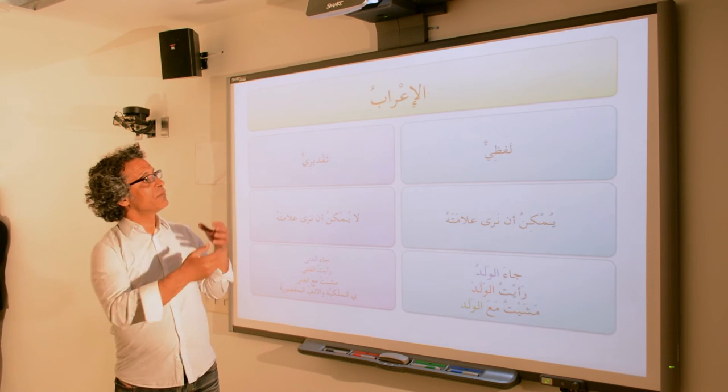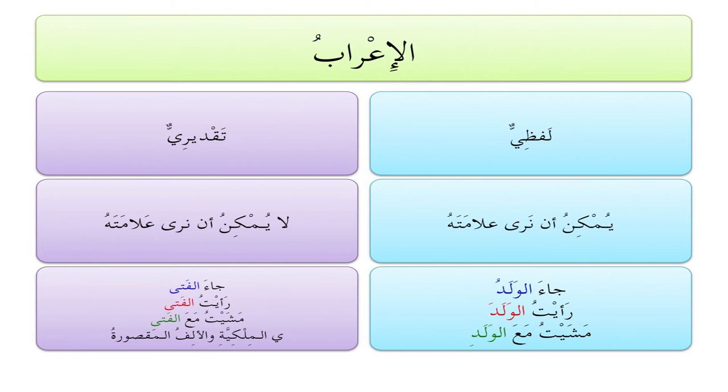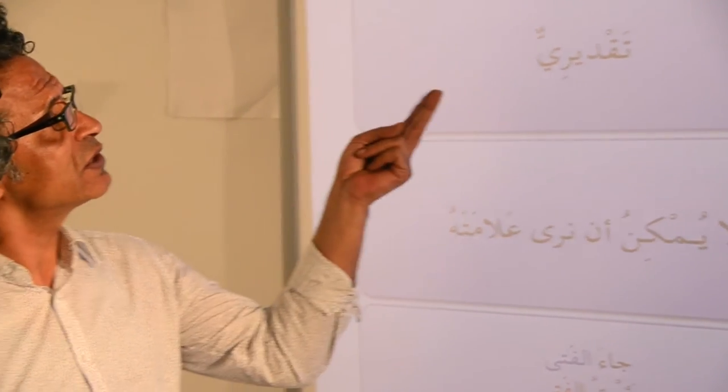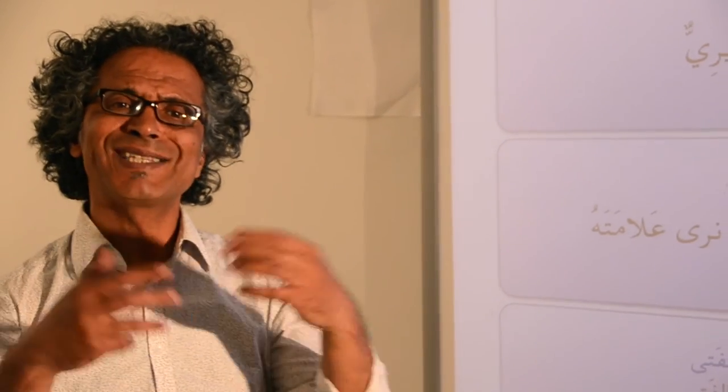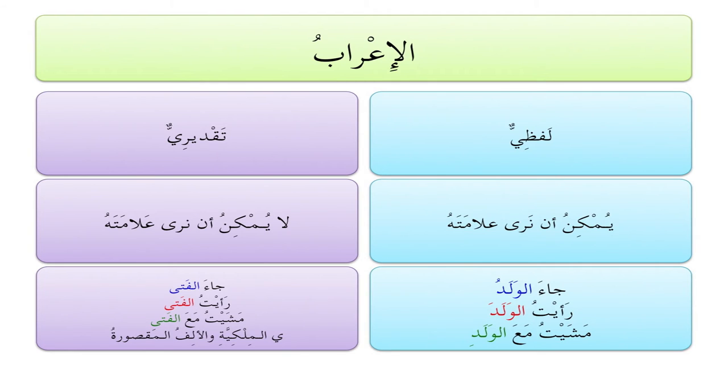الإعراب في الحقيقة من نوعين — it has two types. لفظي — يمكن أن نراه — so you could actually see the marking of the case ending at the end of the word. Or تقديري — that you actually estimate. You cannot see the ending but you can estimate what it is. So look at the examples: جاء الولد، رأيت الولد، مشيت مع الولد. In the word الولد, we can mark the ending with ضمة، فتحة، or كسرة depending on the role it plays in the sentence.